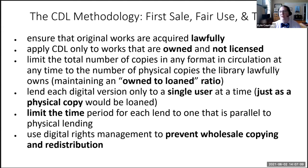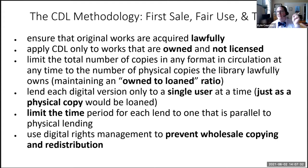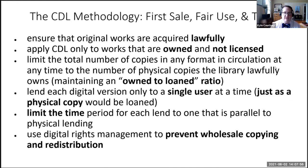First, we start with the idea that these works are acquired lawfully — works that you are purchasing. It's very important to distinguish between works that are owned and works that are licensed. The majority of e-book collections are not owned in the traditional sense of physical ownership. In the digital space, we refer to the limitation as friction. You need to be able to own these works to replicate that particular friction. You cannot duplicate more than you own — we call this the own-to-loan ratio — replicating the loan period that exists in the physical.